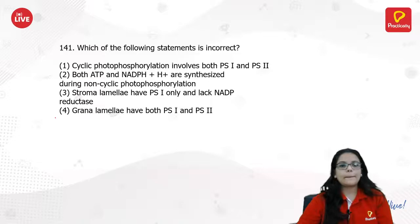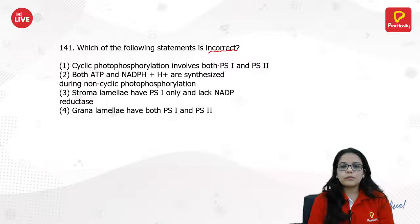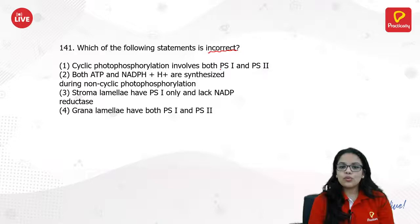Which of the following statements is incorrect? Cyclic photophosphorylation involves both PS1 and PS2 — this is wrong. It is only non-cyclic photophosphorylation which involves PS1 and PS2. Cyclic photophosphorylation only involves PS1. The answer is 1.